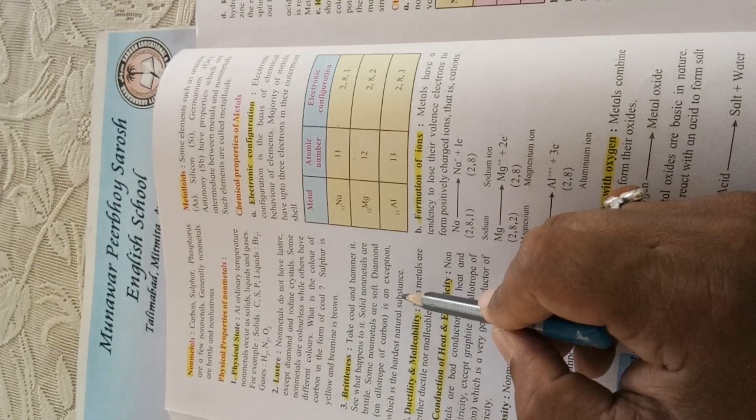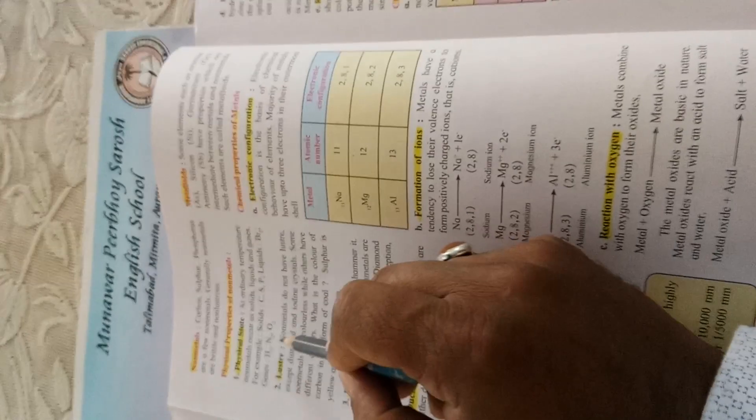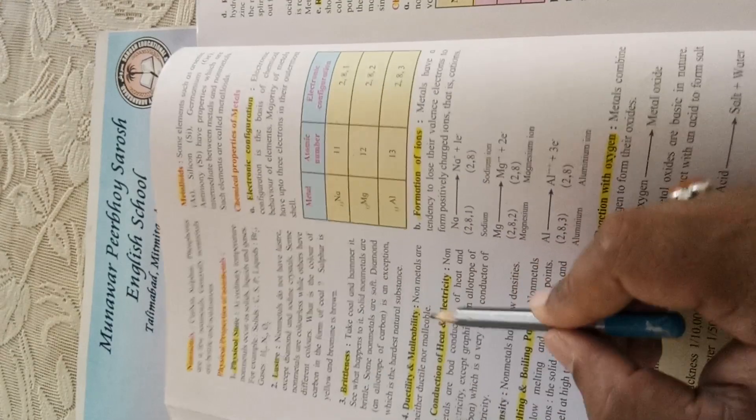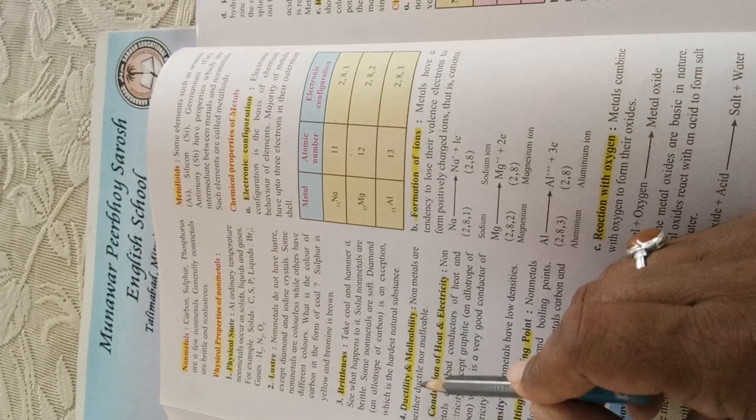So the first properties we have seen today are physical state, then lustre, then brittleness. Now we will go to the fourth point: ductility and malleability.